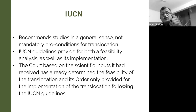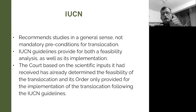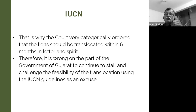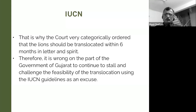The much-cited IUCN guidelines recommend studies in a general sense and are not mandatory preconditions for translocation. The guidelines have two parts: one for feasibility analysis and one to guide implementation. The court, based on scientific inputs, had already determined the feasibility of the translocation. The order, while describing alignment with IUCN guidelines, was regarding implementation — not feasibility analysis. That is why the court categorically ordered the lions translocated within six months. If studies had to be done, how could that be possible in six months? It is very wrong for Gujarat state government to continue challenging feasibility using the IUCN guidelines merely as an excuse.